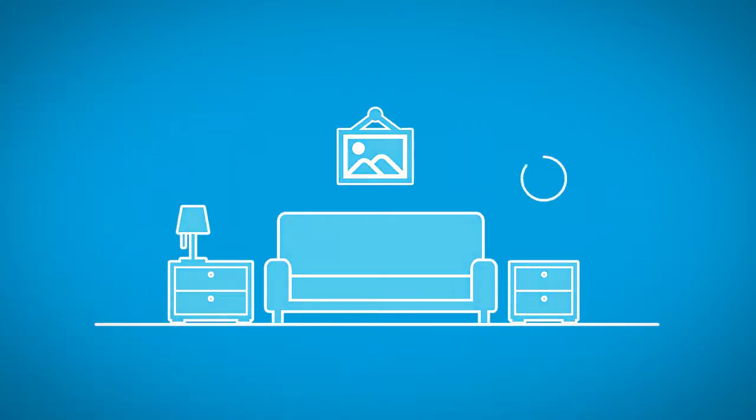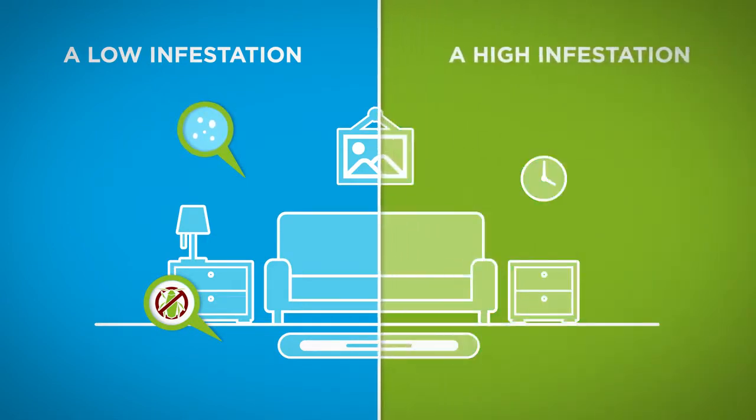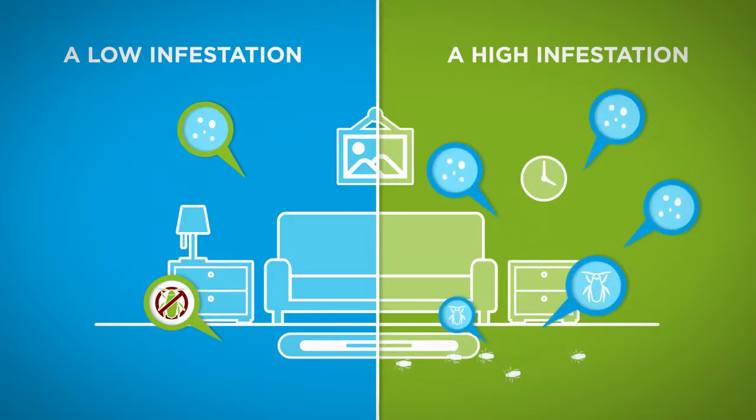The cockroach infestation levels are defined as a low infestation of cockroaches where there are no insects, hardly any spots of faeces or shed skins visible. A high infestation of cockroaches where even living insects are visible during the day, there are lots of faeces spots and shed skins are visible.